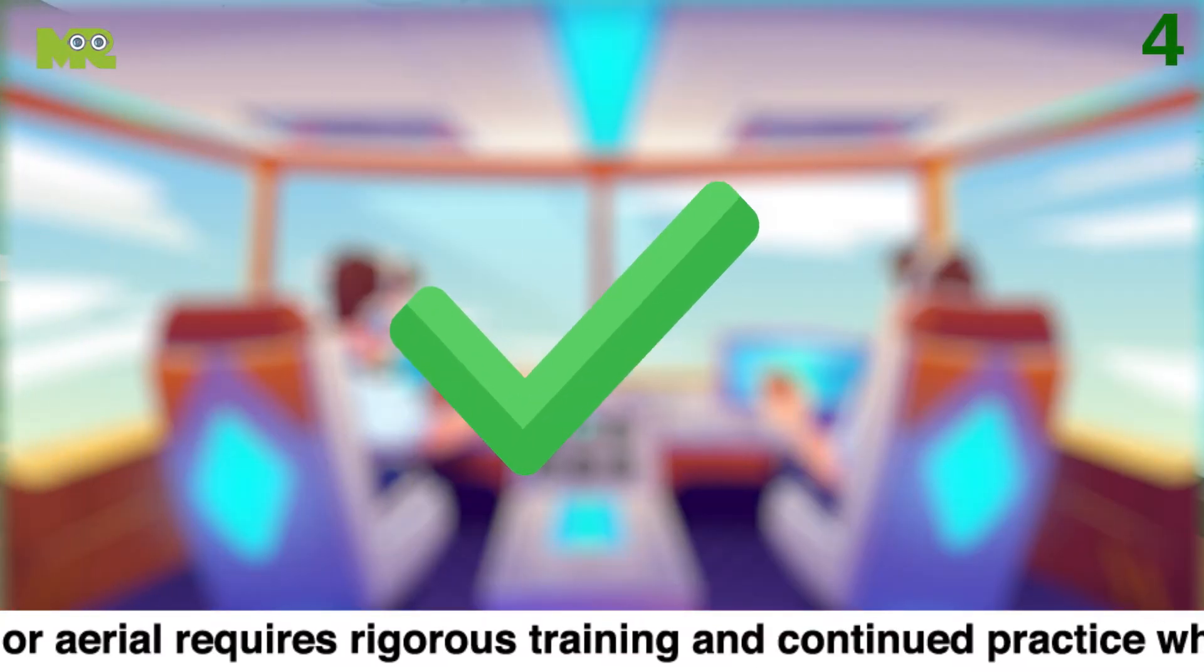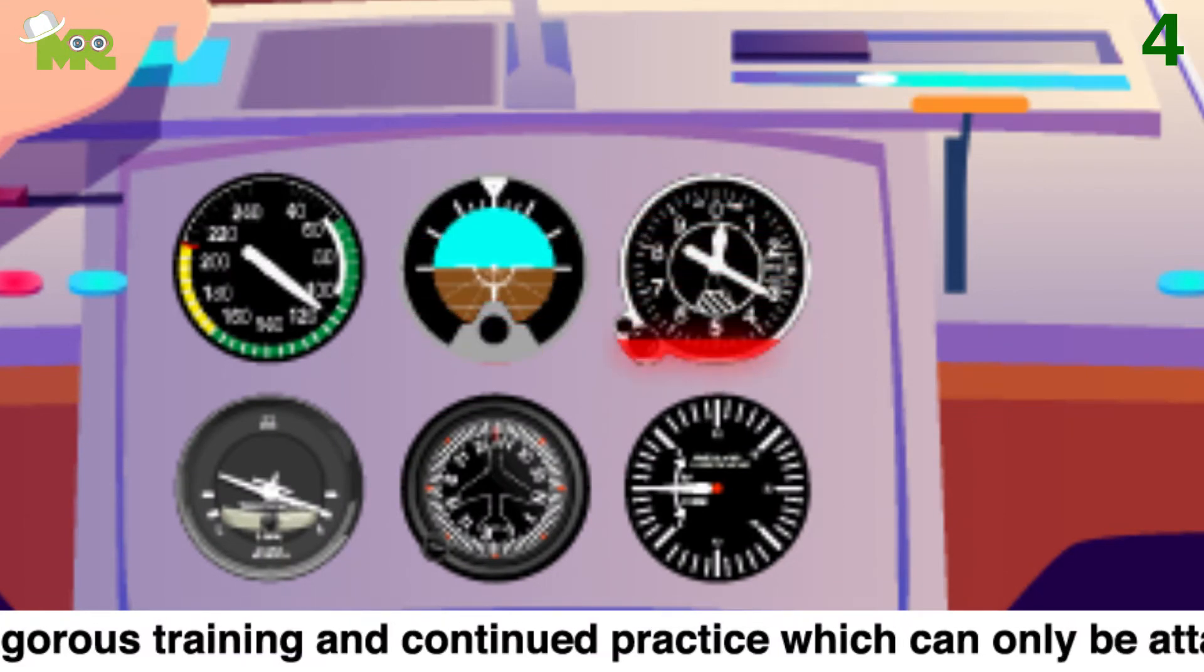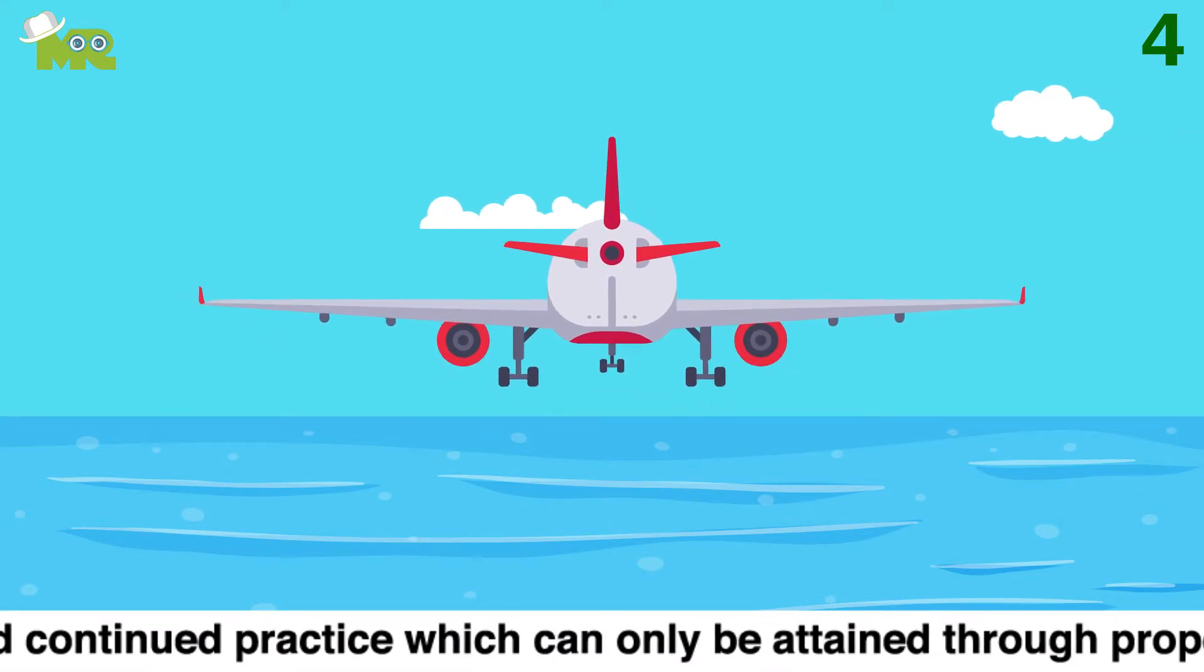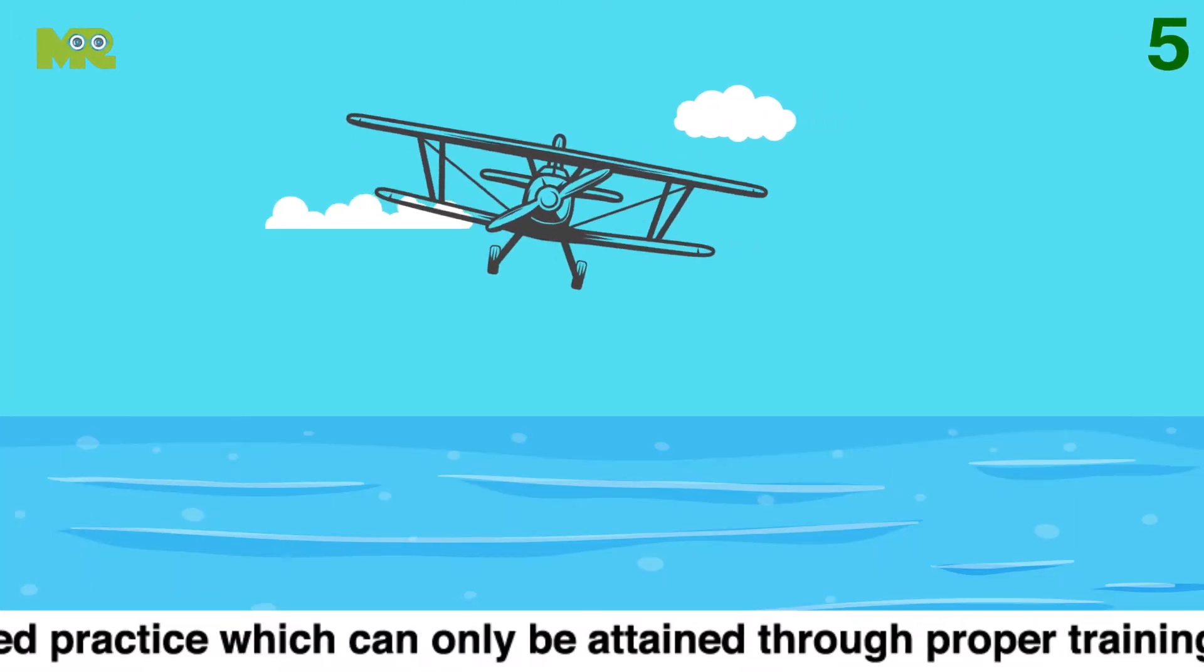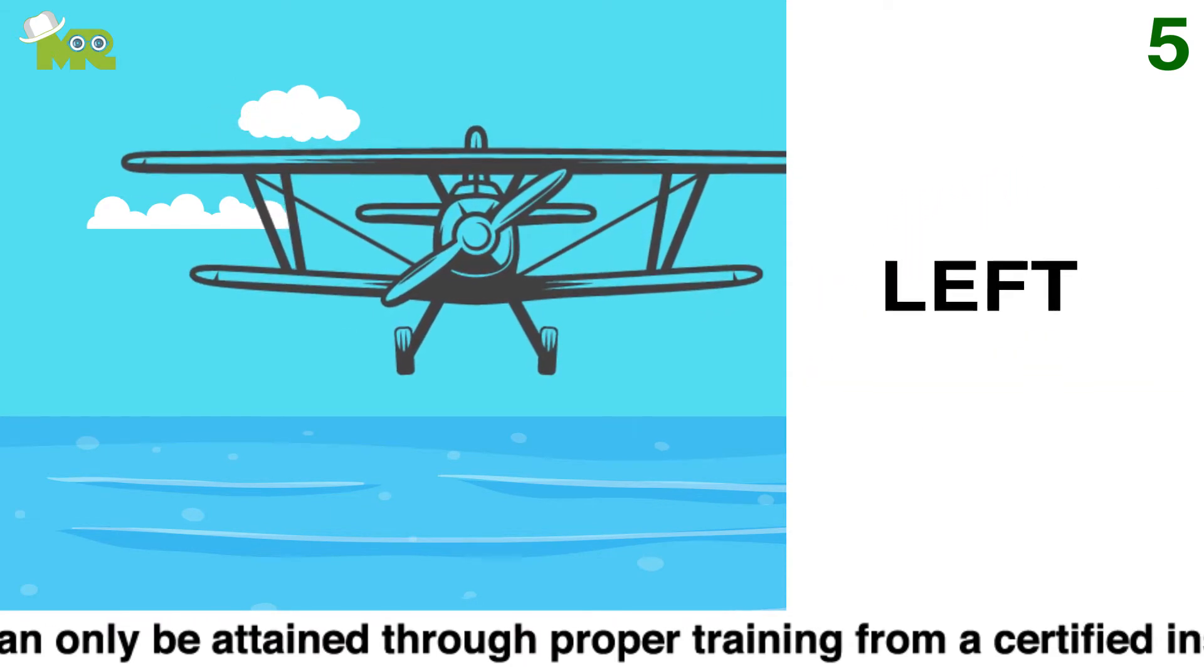Fourth, make sure that you continually scan the altitude indicator and the altimeter along with the rest of the instruments to make sure everything is running efficiently. Fifth, if you want to bank or turn your plane, use the yoke in front of you and turn it left or right.